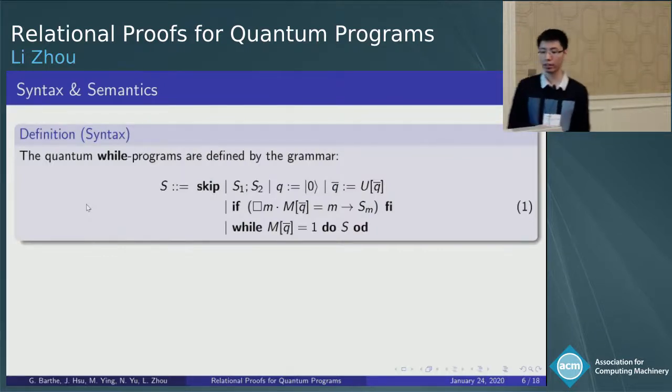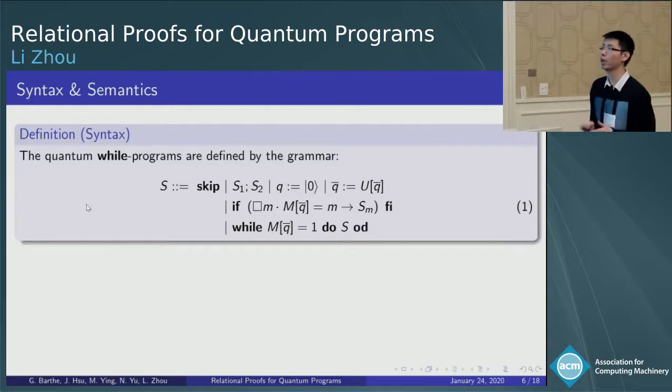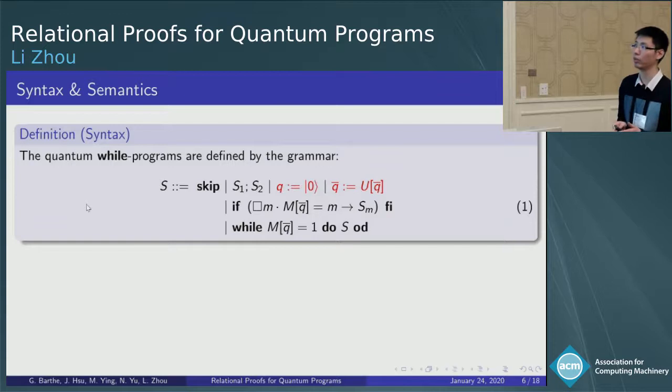For syntax, we use a high-level programming language, the so-called quantum-while language, which is quite similar to the classical-while language. It consists of skip, sequential composition, initialization, unitary transformation, if and while statements. Note that the classical assignment is now replaced by the initialization and the unitary transformation.